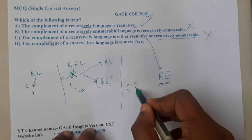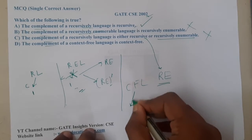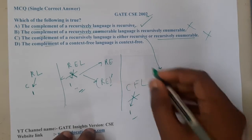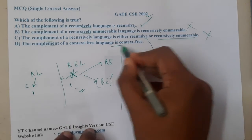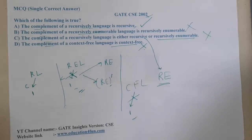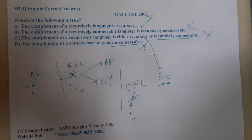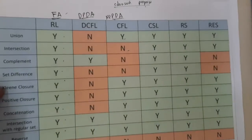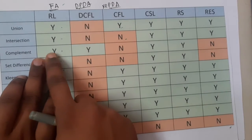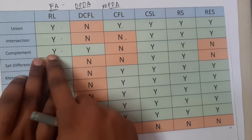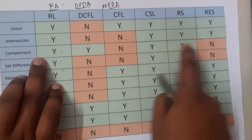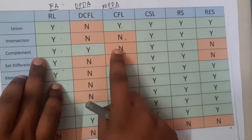Option D says the complement of a context-free language is context-free. Context-free languages are also not closed under complement, so Option D is also wrong. This question is directly based on the closure properties table, specifically the complement row.